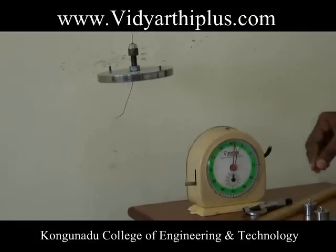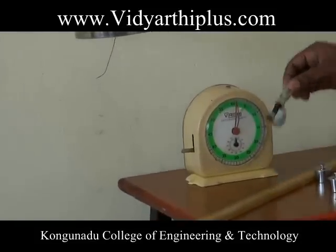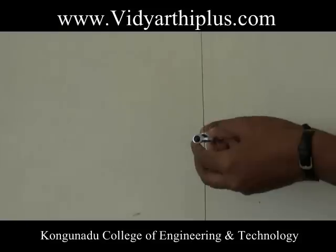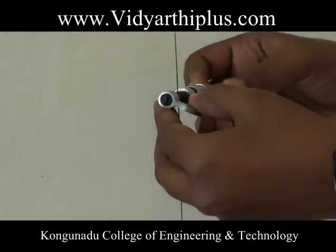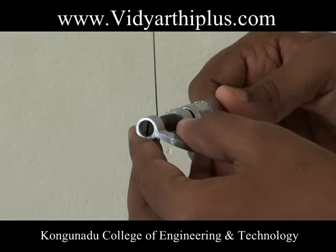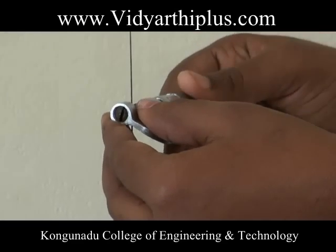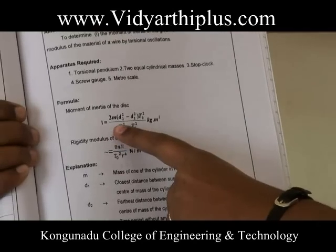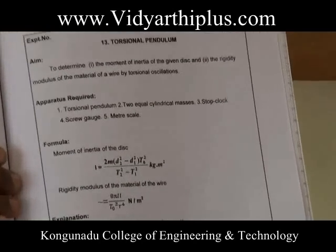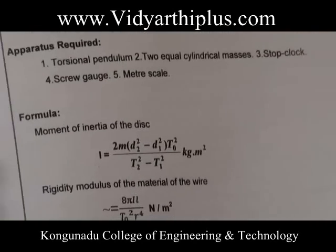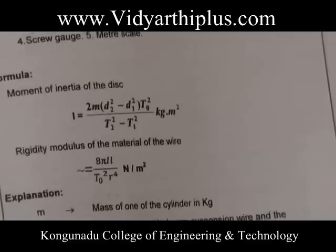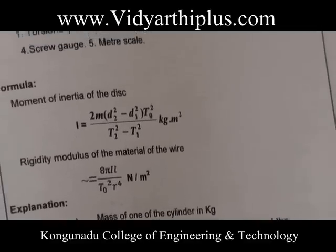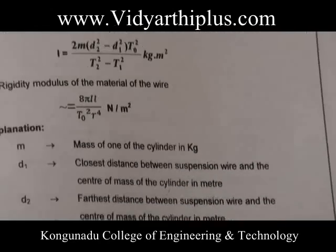The diameter of the wire is measured carefully at various places using a screw gauge, and the mean diameter and radius are calculated. The moment of inertia I is given by: I = 2m(D2² − D1²) × T0² / (T2² − T1²) kilogram meter squared.